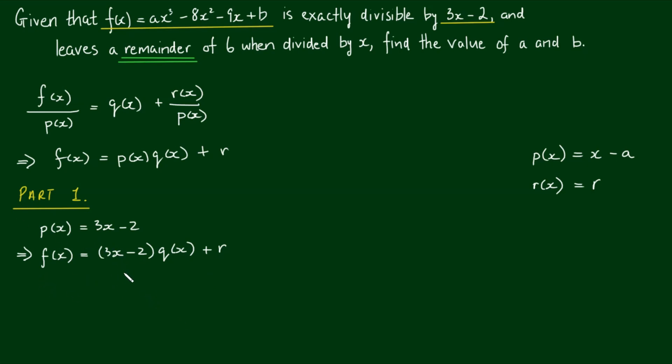So let's write this p(x) in the form of x minus a. So in order to do that, I'm going to multiply this whole thing by 1 third. So we have 1 third of f(x) is equal to 1 third times 3x minus 2 by the q(x) plus 1 third of the remainder r. So if we take this 1 third into the first set of parentheses on the right-hand side, we get x minus 2 thirds. The q(x) remains as it is. We can write the remainder as r on 3.